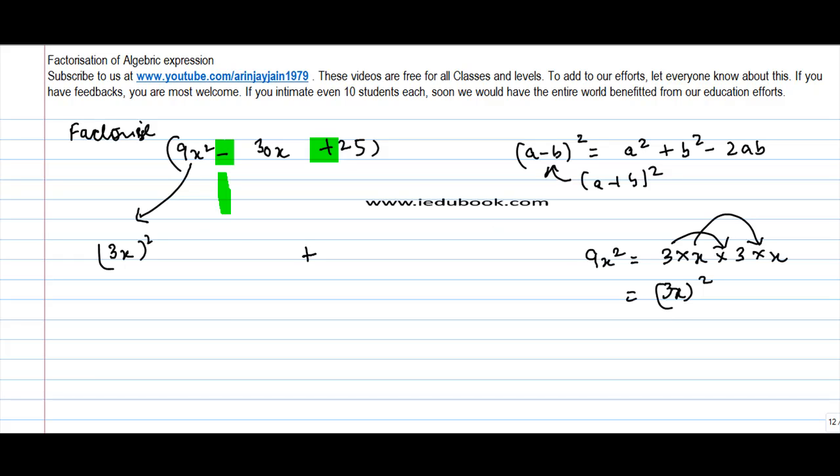Similarly, 25 can be written as 5 square. And the only thing that is left is if I equate this to my equation, I would get this as a, this as b. And here it has to be minus 2ab.